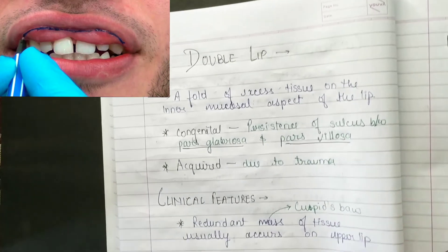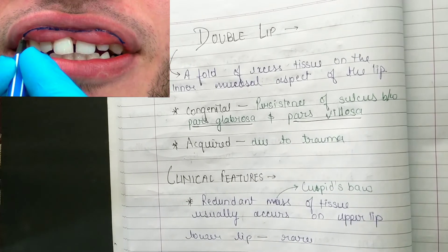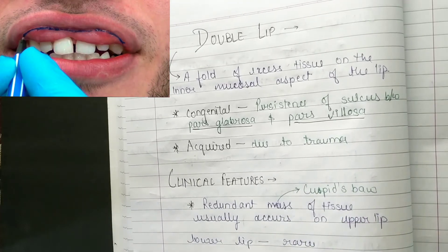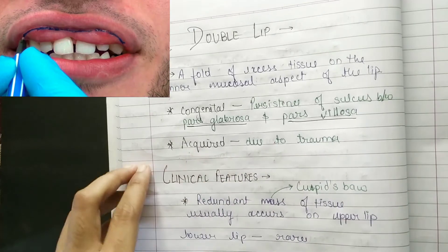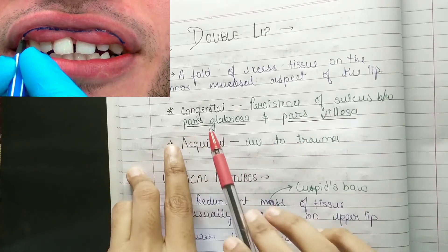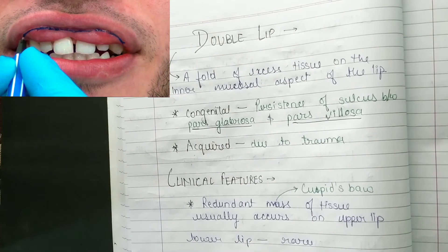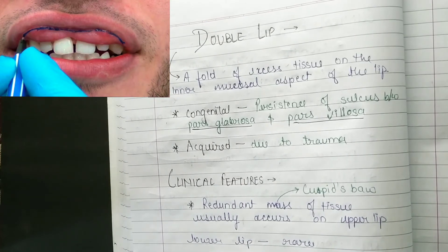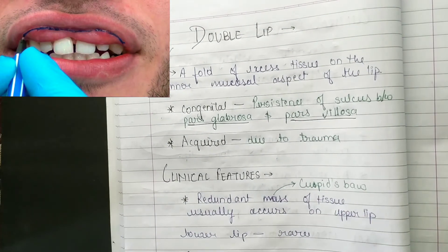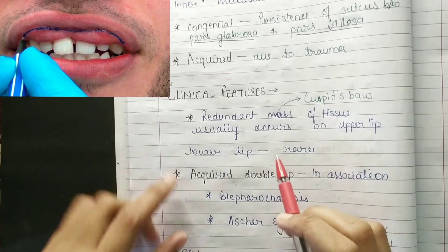This is why it is called double lip. It can be congenital, or it can be acquired — for example, due to trauma, or due to persistence of the sulcus between pars glabrosa and pars villosa. This is the cause in congenital cases.